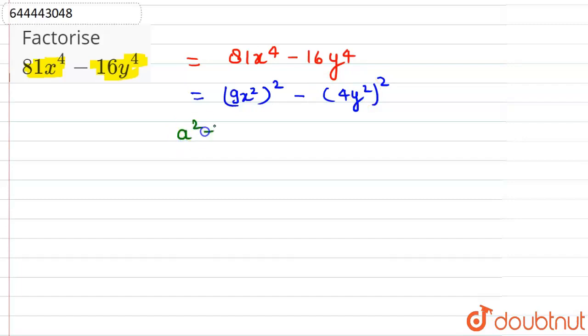We know the identity a square minus b square is equal to a plus b into a minus b. Here 9x square is a and 4y square is b.